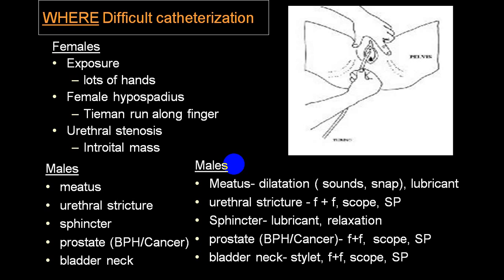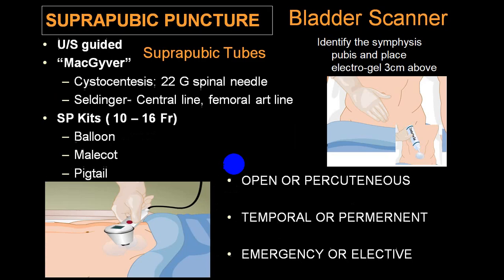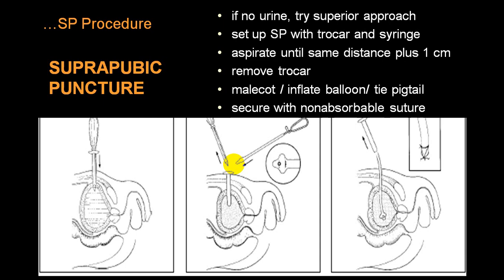In males with meatal stenosis, try to dilate using different procedures. In cases of urethral stricture or large prostate, do not attempt forcibly — experts should perform it. Suprapubic puncture can be open or percutaneous, temporary or permanent, emergency or elective. You can use balloon catheters, Malecot catheters, or pigtail catheters, frequently under ultrasound guidance. The procedure involves introducing a trocar, removing it, introducing the Malecot catheter, withdrawing the trocar, and fixing the catheter.